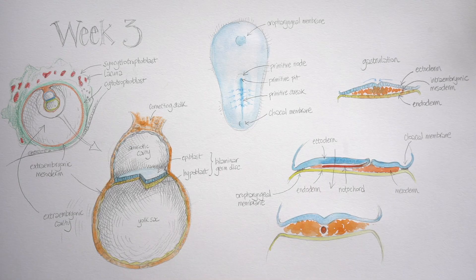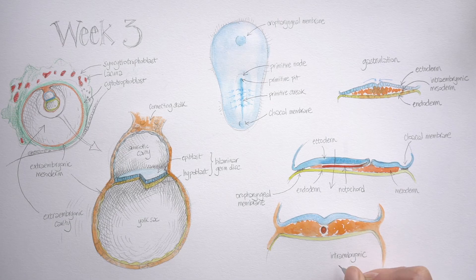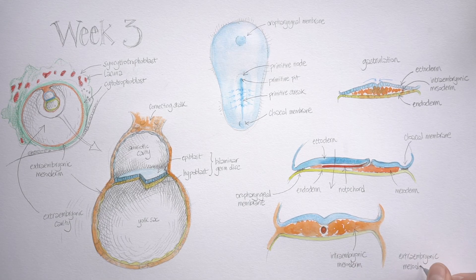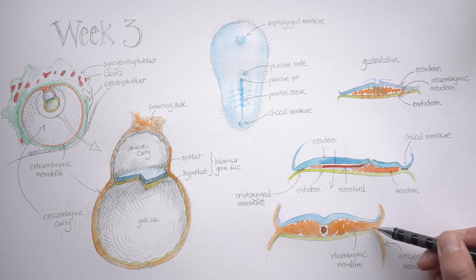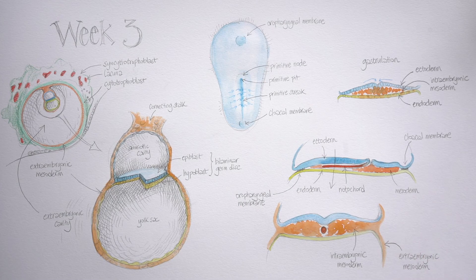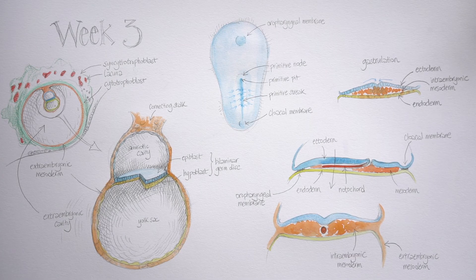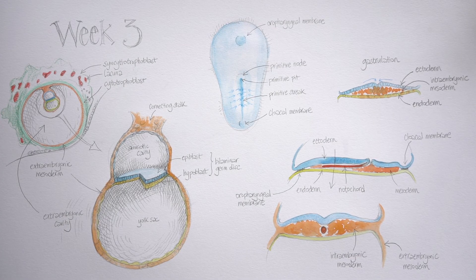I now want to look at what's happening with this intra-embryonic mesoderm and the extra-embryonic mesoderm. What you can see is the jam in the sandwich pushes right out to the edge until it just joins up with the extra-embryonic mesoderm, that layer that lines the outside of the amniotic cavity and the yolk sac and forms the connecting stalk as well.